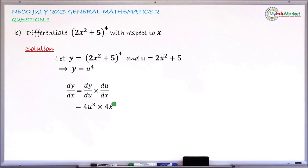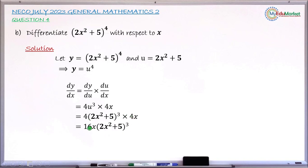Next, replace u back with 2x² + 5. This gives 4 × (2x² + 5)³ multiplied by 4x. Multiplying 4 by 4x gives 16x, so the final derivative is 16x(2x² + 5)³.